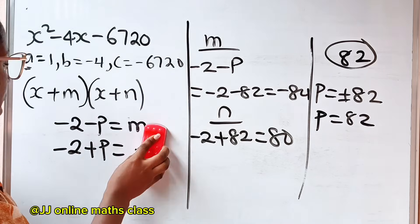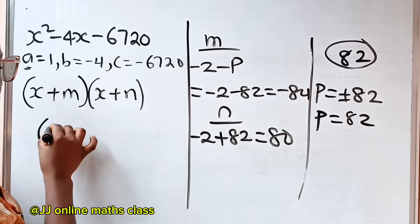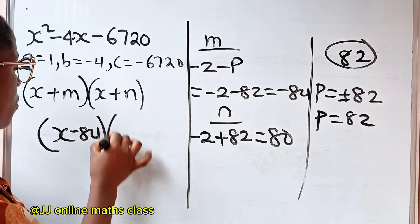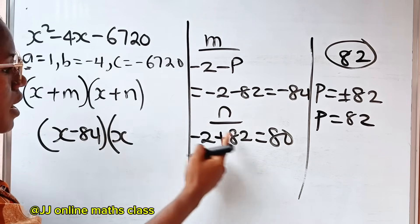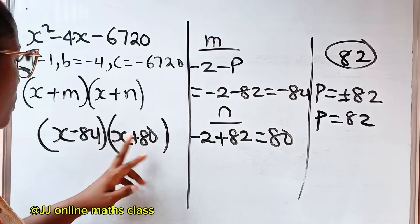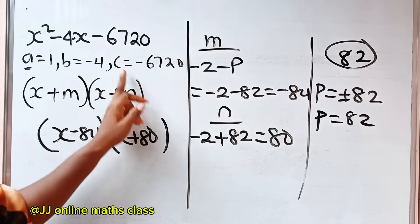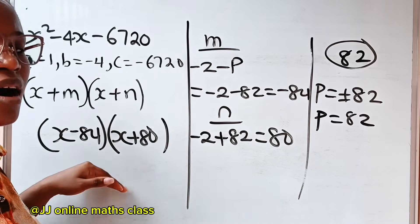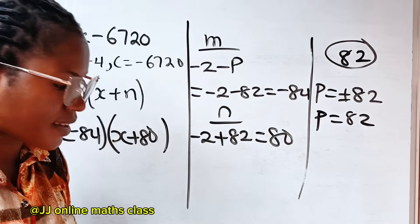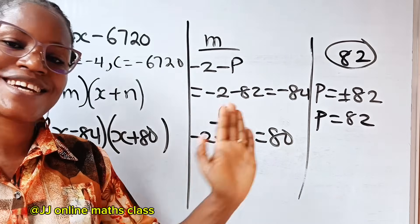So it simply means that to factorize this, it's going to be x plus m, and m is minus 84, multiply by x plus n, and n is plus 80. This should be the final answer. If you say minus 84 plus 80, which will give us minus 4, and minus 84 times 80, which will give us minus 6720. So this is how to factorize this without having to guess. If you find this interesting, please share. Thank you so much for watching. Bye.